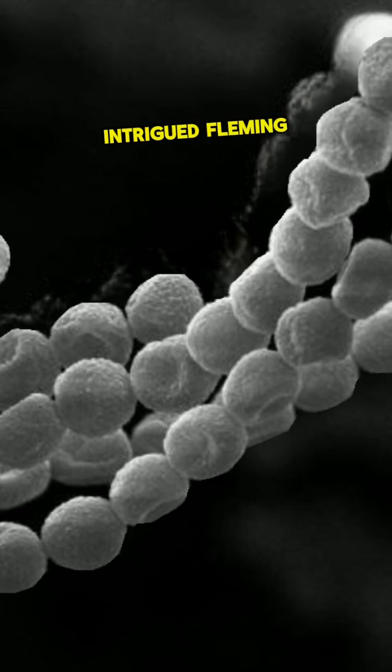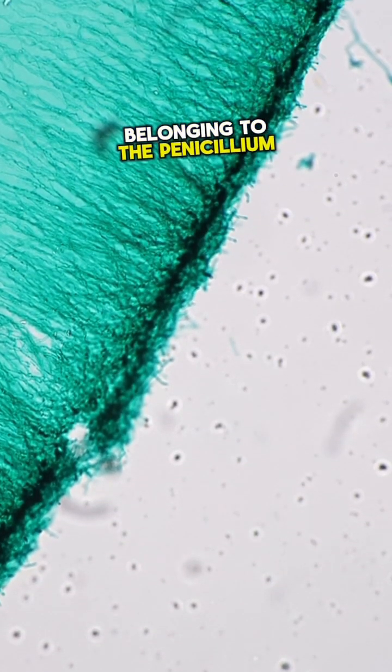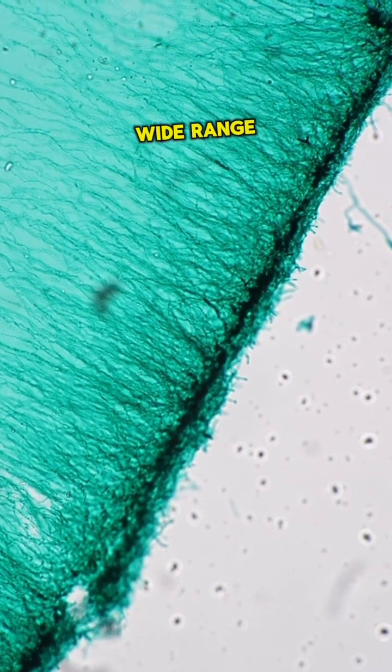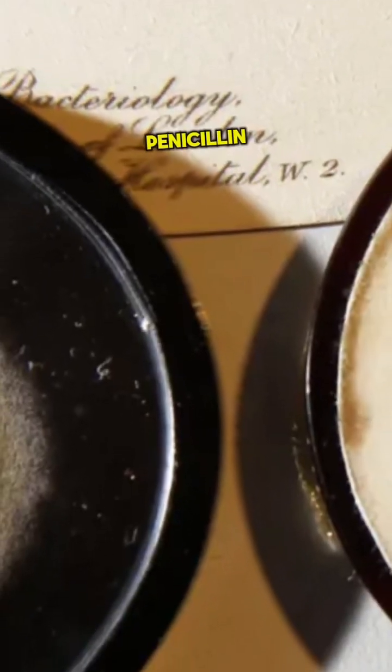Intrigued, Fleming isolated the mold and identified it as belonging to the penicillium genus. He soon realized that the mold produced a substance capable of killing a wide range of harmful bacteria. He named this substance penicillin.